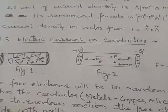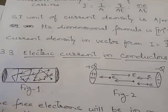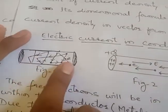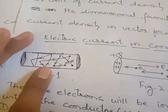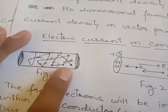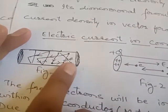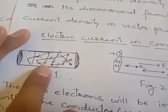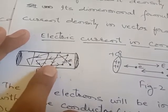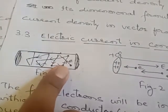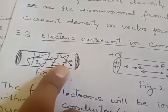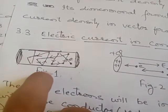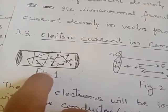We have seen that there is a wire and in this conducting wire the electrons are moving randomly. The random motion happens in one direction and then the other, so it cancels out. Electrons will collide with the ions and with the atoms.